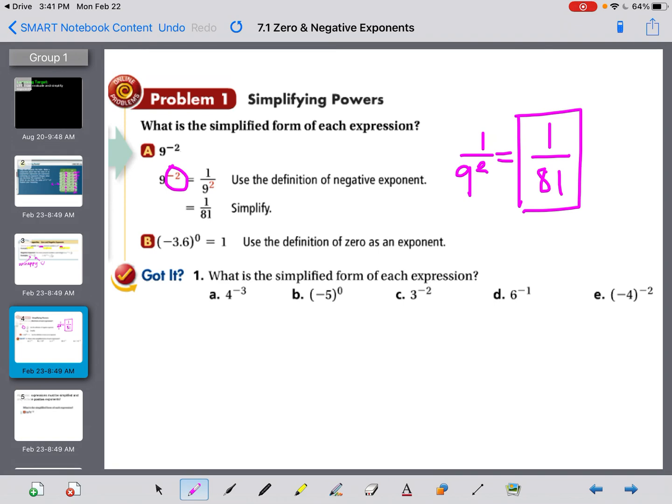So let's try these problems down here at the bottom. Because I have a negative exponent, I'm going to write it as a fraction, 1 over 4 to the 3rd power. And because 4 to the 3rd power is 64, I have 1 over 64. Letter B has a 0 exponent, so it doesn't even matter what's in here. My answer is just going to be 1.